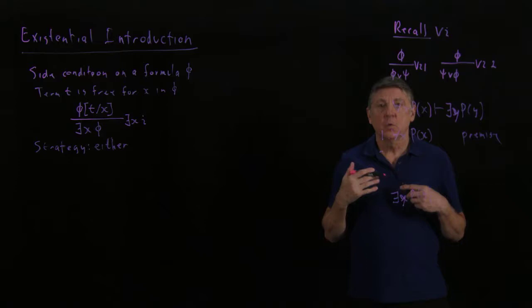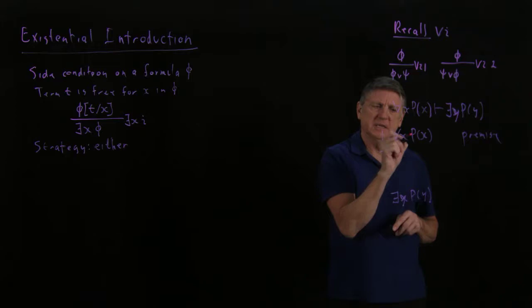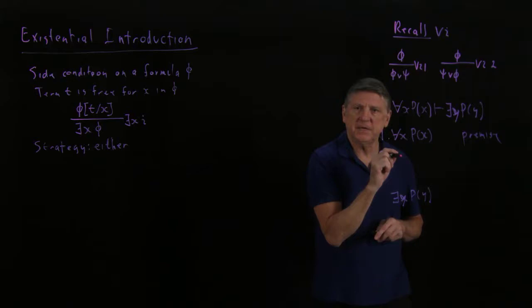And if we then look at our premise and conclusion and ask ourselves what reasoning could we use to go between them, we can see that if we use forward reasoning, we could say, well, if everything has that property, then something has that property. So what could it be?